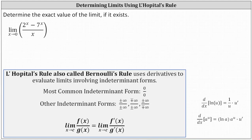Let's first see if we can determine the limit by performing direct substitution. We substitute zero for x, which gives us two to the power of zero minus seven to the power of zero, all divided by zero. Simplifying, two to the zero is one, seven to the zero is one, giving us one minus one, or zero divided by zero.